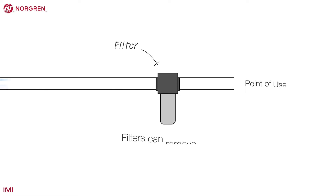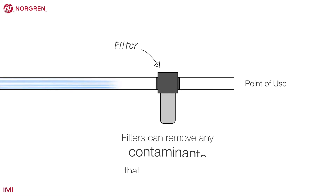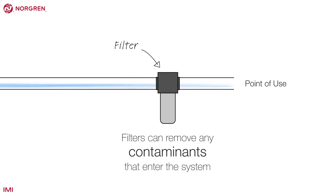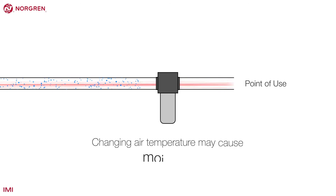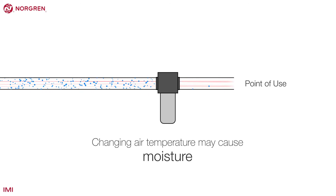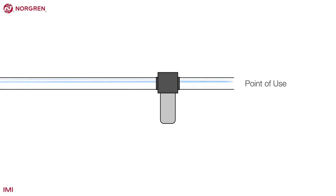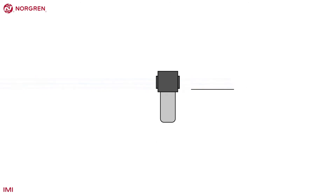Filters at the point of use can remove any contaminants that enter the system after they have left the air receiver. For example, changing air temperature may cause moisture on the way to the point of use. With all this in mind, let's take a look at the range of filters available to us and how they work.